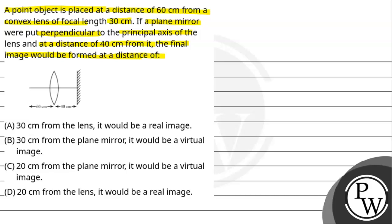So you can see point source 60 cm from the lens which is basically convex in nature. A plane mirror is placed 40 cm from the lens. We have to find where the final image is formed. Let's start the solution, but before that,